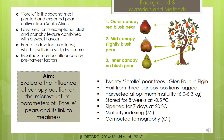Tagged fruit were harvested at optimum harvest maturity and stored for 8 weeks at minus 0.5 degrees Celsius and ripened for 7 days at 20 degrees Celsius, after which maturity indexing and computed tomography took place.